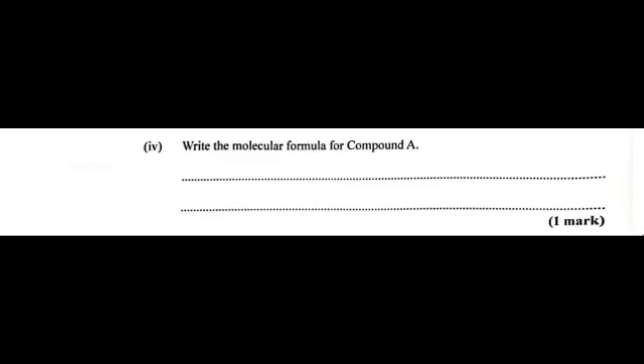Part 4 of B. Write the molecular formula for compound A. So earlier we said that compound A has six carbons and it had 14 hydrogens. So it's C6H14. And they didn't ask us to name it, so we will not name it.